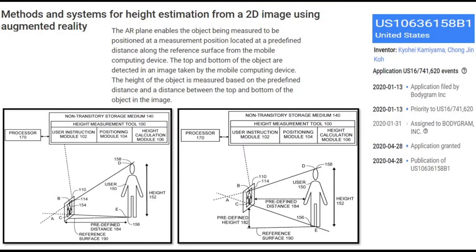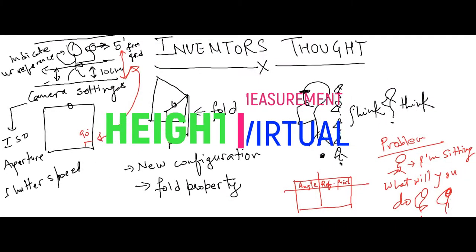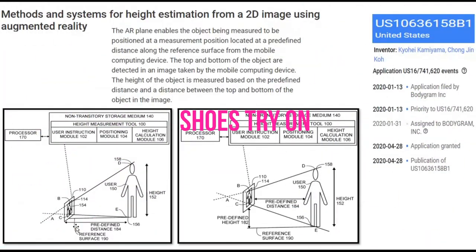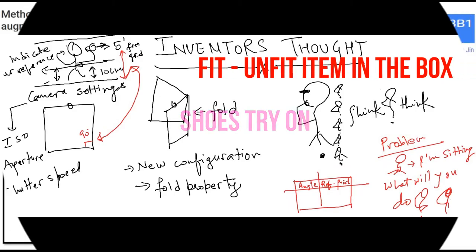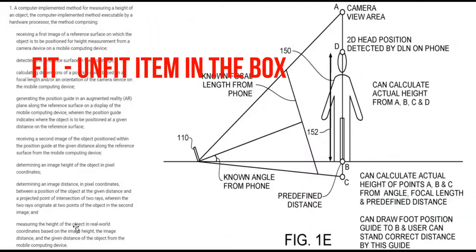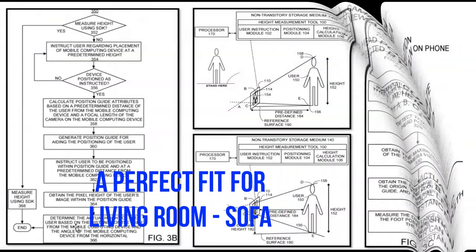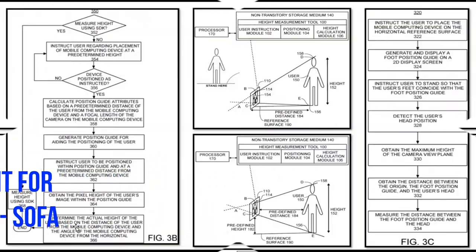Coming to other Augmented Reality use cases: measuring object height, width, and shape. It can help finding the size of feet for ordering appropriate shoes online, items' dimensions to find an appropriate box, and furniture dimensions to place it in the living room. There are lots of use cases — help yourself in finding those from a consumer perspective.